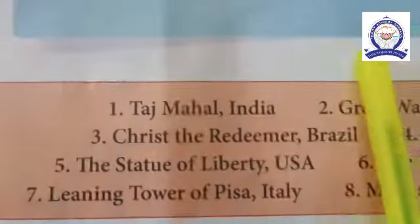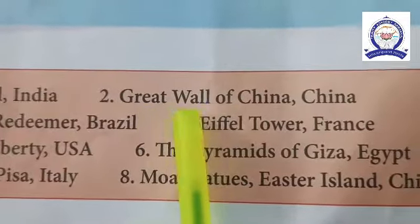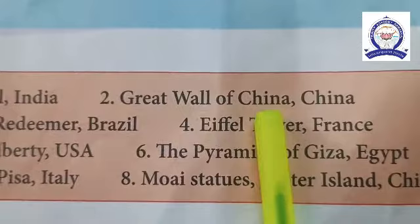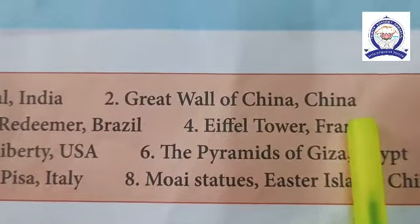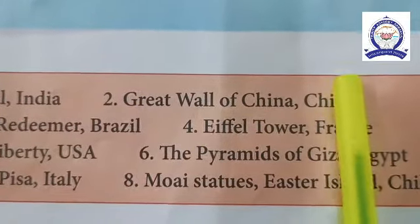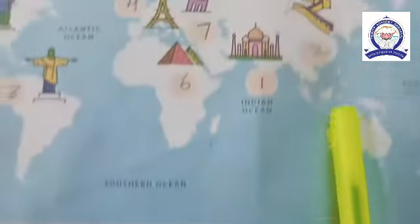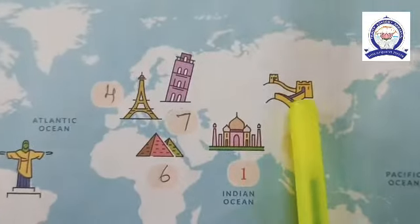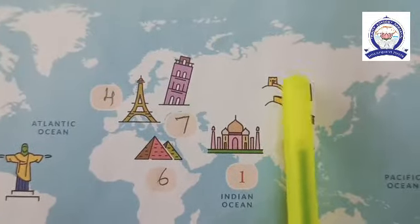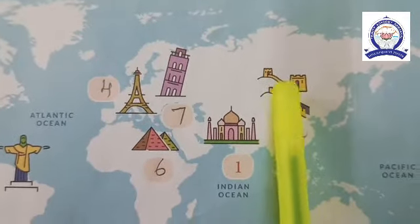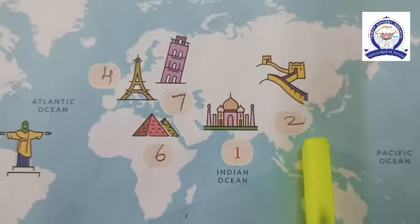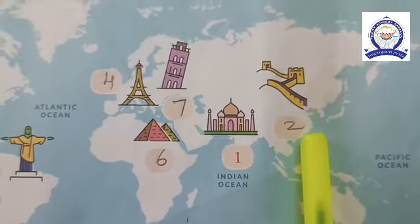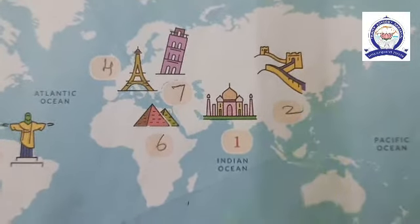The second one is the Great Wall of China. It is in China. You can see it here — the Great Wall of China is number 2, so you have to put number 2.